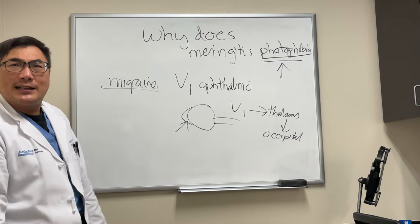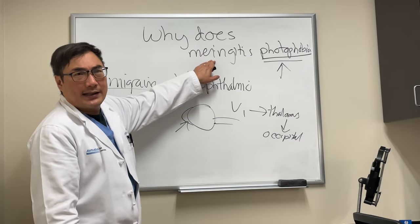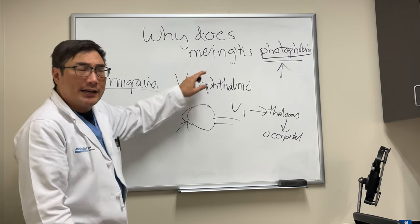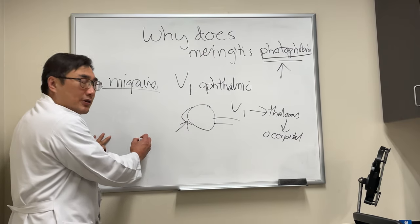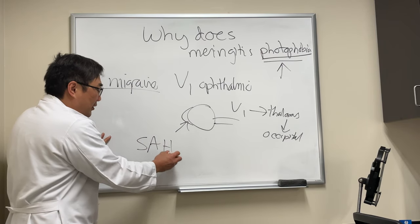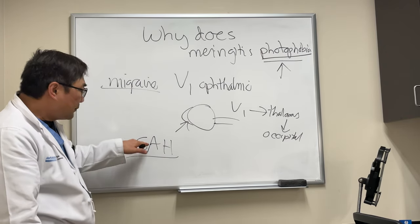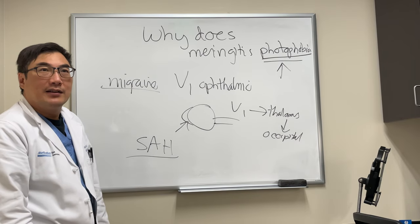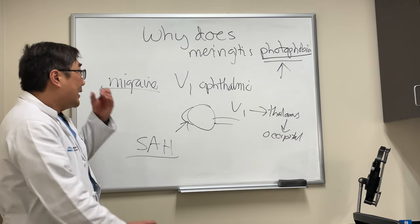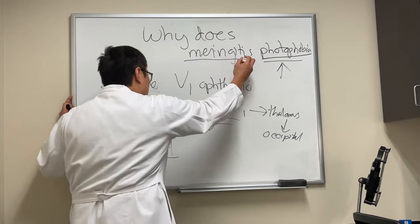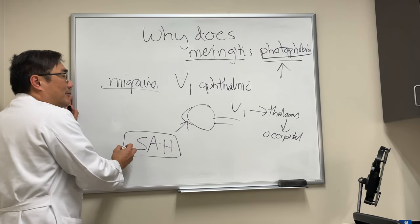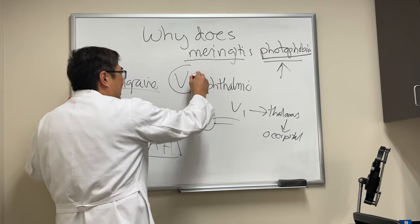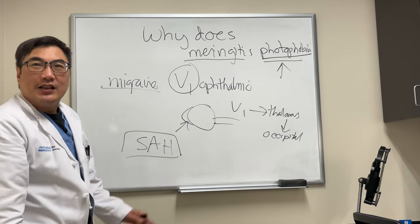Now, anything in the meninges can cause photophobia — not just meningitis, but anything. If you have a subarachnoid hemorrhage and the worst headache of your life, these people often have photophobia even though there's nothing wrong with their eye. The meninges and subarachnoid hemorrhage — inflammation in the head — are also innervated by the trigeminal.